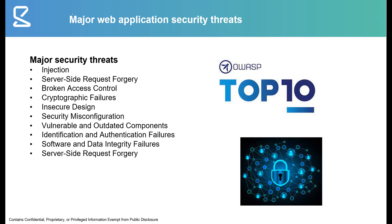Identification and authentication failures are also a major concern. If a user is not properly authenticated, it could lead to major data exposure or leakage and allow unwanted actions that are harmful to the enterprise. Software and data integrity failures are also included. Server-side request forgery is a new topic added in the OWASP Top 10 last year in 2021.